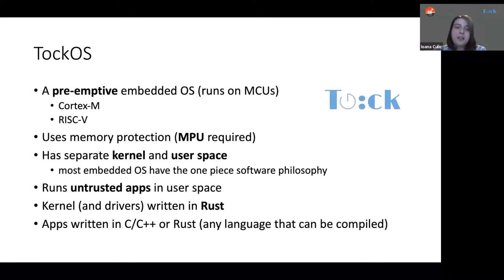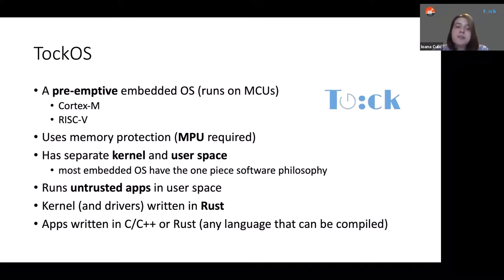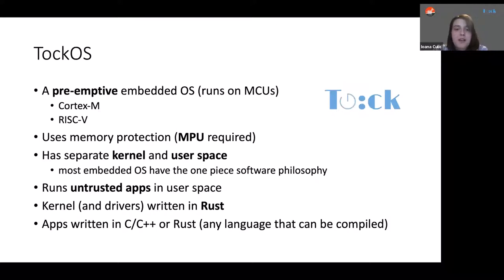A few details about Tock: it is an open source operating system, it is a preemptive embedded operating system, so it runs multiple applications at once. It supports Cortex-M and RISC-V MCUs. It is one of the few embedded operating systems that uses the memory protection unit. The kernel space and the user space are separate, so we have the kernel and then we have the applications. Applications can be developed in programming languages such as C or Rust, and the applications don't need to be fully secure because security is guaranteed at the kernel level.